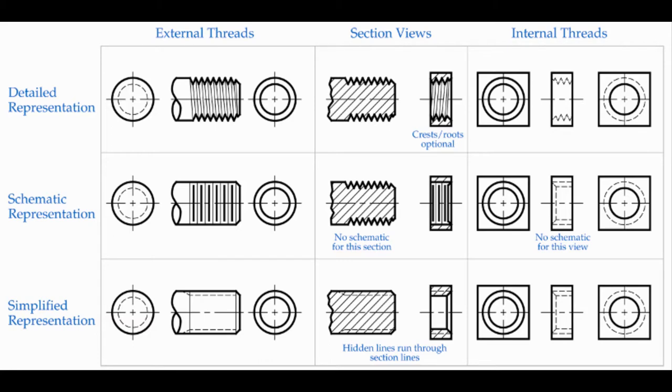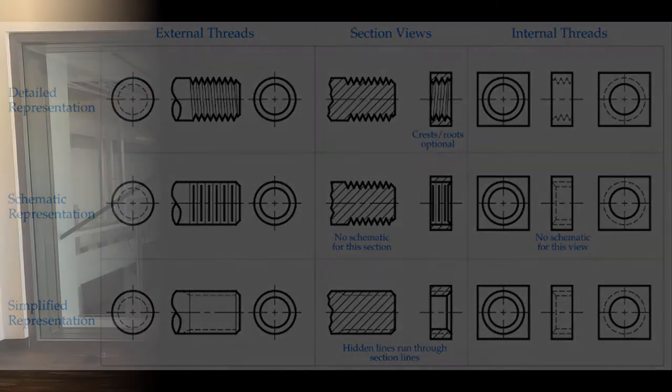Detailed representations are occasionally used if the thread is a special form or very large on the drawing — sometimes drawn by hand, sometimes by computer. But the recommended way is the simplified representation, which just uses hidden lines to show where the thread would be. These hidden lines aren't directly dimensioned; you'll have a note indicating the type of thread, the series, and so on. The simplified representation is just there to let you know it's a thread — the actual thread information comes from a callout note.